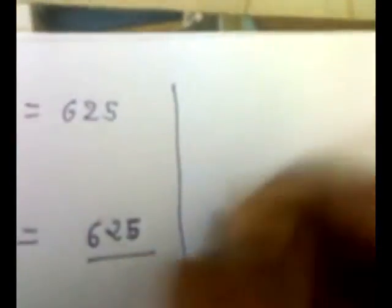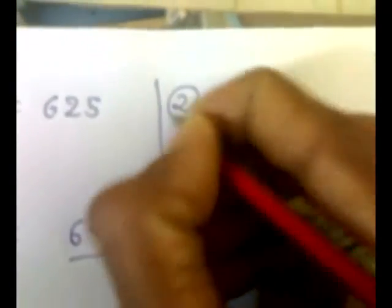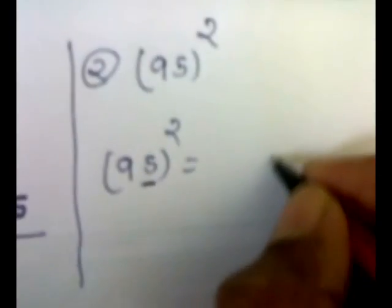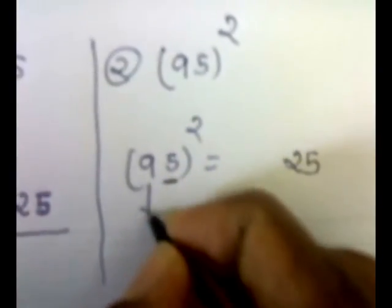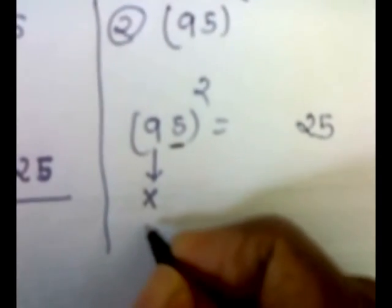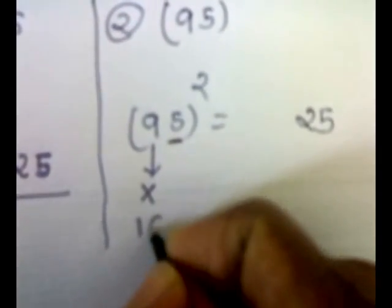Let's take another example. Let's say square of 95. So 95 square. First we will again put square of 5. That is 25. And we will multiply this 9 by the very next digit.